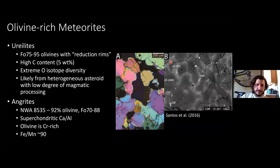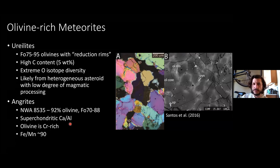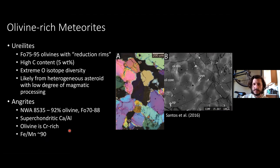Finally, the angrites — there is one dunitic angrite, NWA 8535, which is 92% olivine with forsteritic composition Fo70–88. These are unique in having superchondritic Ca/Al, with a lot of calcium included in the olivine and pyroxene. The olivine is chrome-rich, and the Fe/Mn ratio, along with all other angrites, is around 90. Keep this in mind when I discuss the new meteorites.